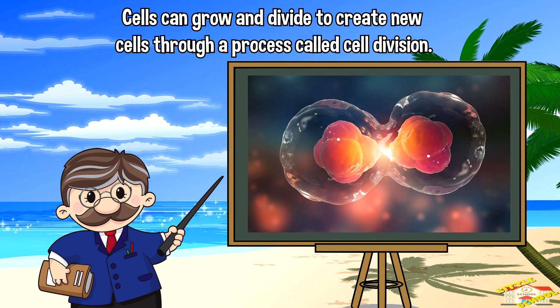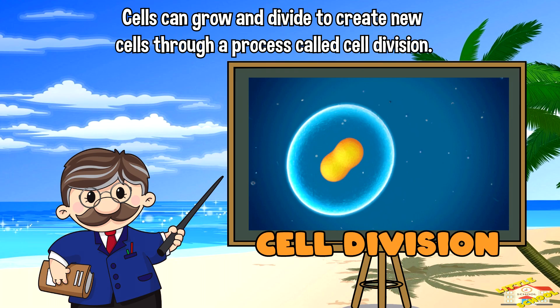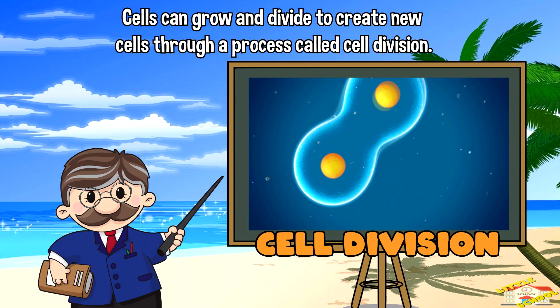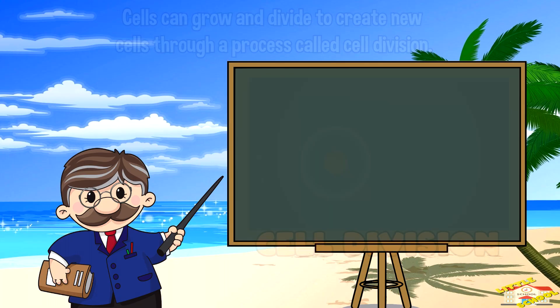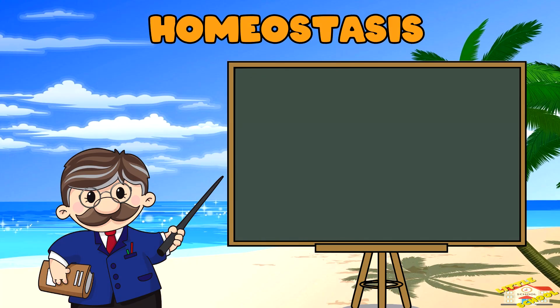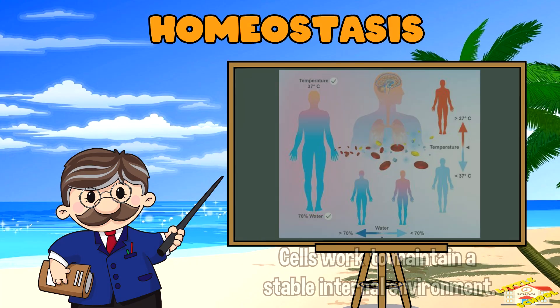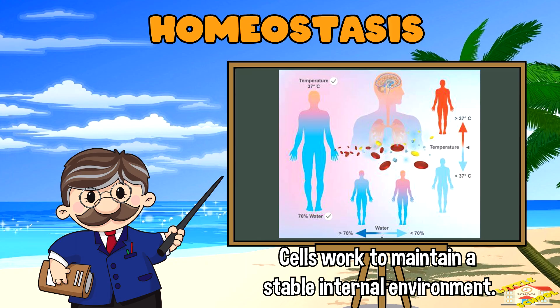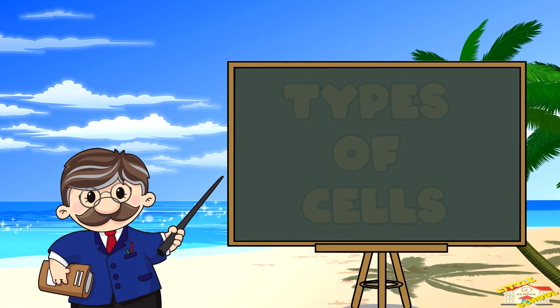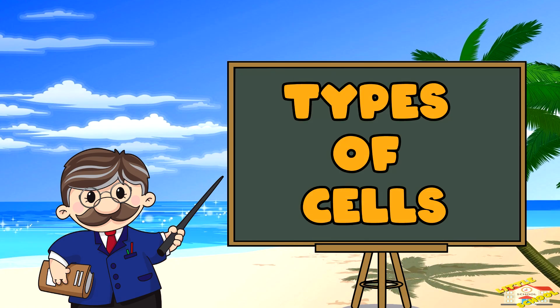Cells can grow and divide to create new cells through a process called cell division. Homeostasis is another function — cells work to maintain a stable internal environment, ensuring that conditions inside the cell remain suitable for life.